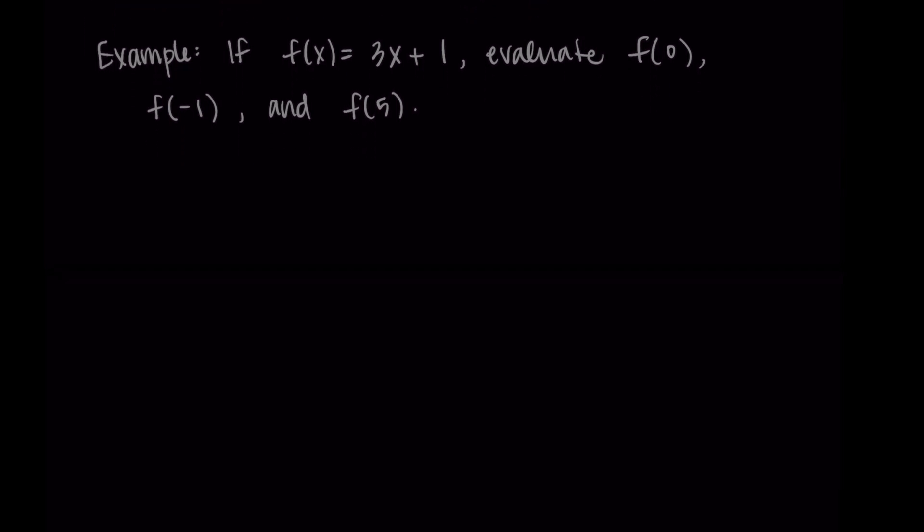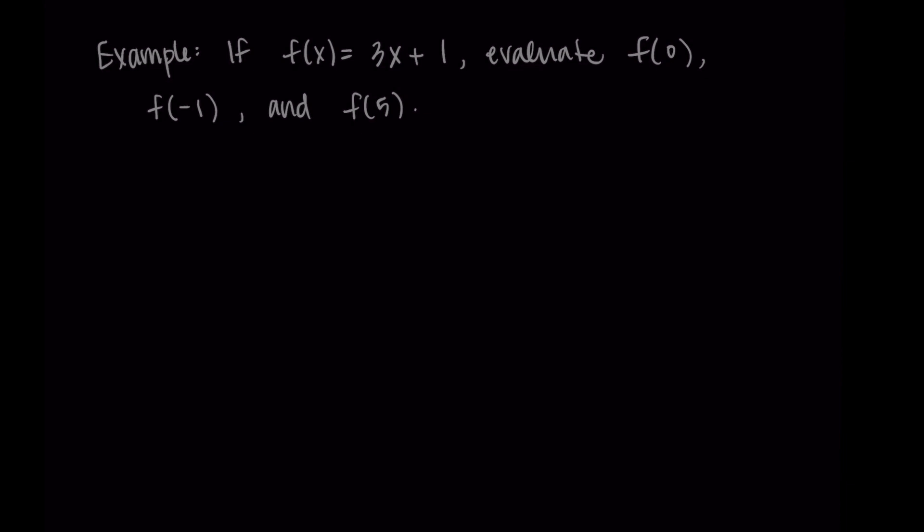This process works the same for each of these. We're taking our function and giving it an input and we want to find the corresponding output. We're going to take our input value and substitute it in for x. Starting with f(0), I'm going to substitute in 0 for x, so instead of 3x + 1, I'm going to do 3 times 0 plus 1. That's just 0 + 1, so f(0) = 1.